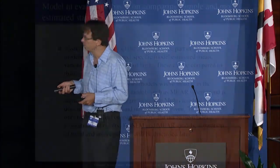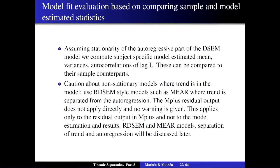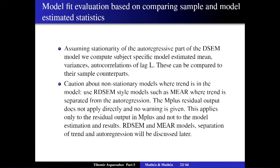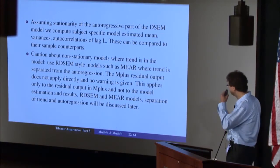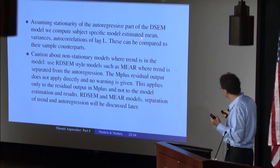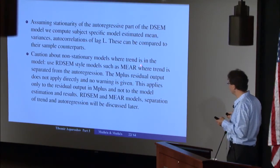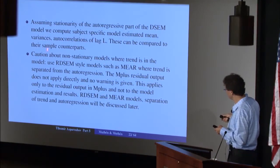The next method we recommend for model fit evaluation is based on comparing sample and model-estimated statistics. Assuming stationarity of the autoregressive part of the model, we can compute subject-specific model estimated means, variances, and autocorrelations of lag L, and those can be compared to the sample counterparts. One caution is that when we estimate the means and variances, we use a method that assumes stationarity of the autoregressive part of the model.